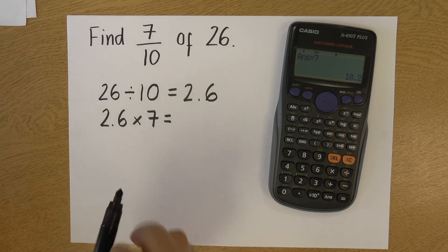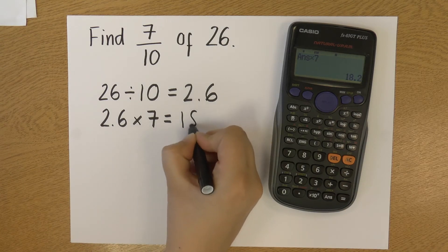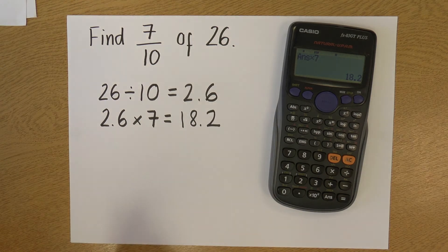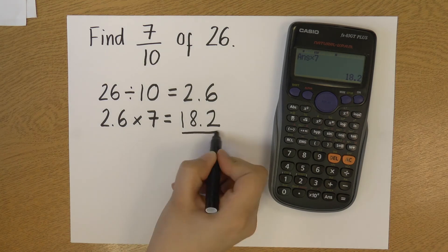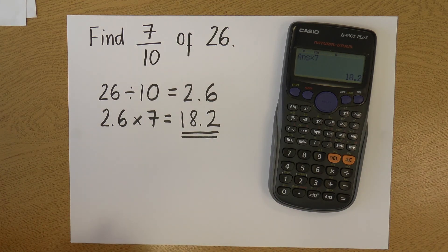So if I press equals, that gives me 18.2. So 18.2 is 7 tenths of 26.